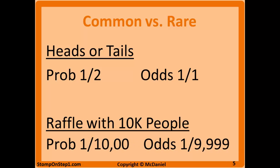However, when you start talking about really rare events, the difference between probability and odds is really tiny. You can't even tell the difference between the two when you take into account rounding.